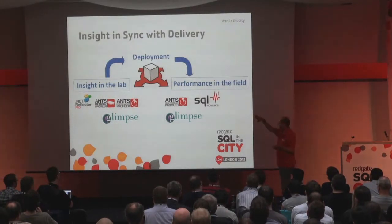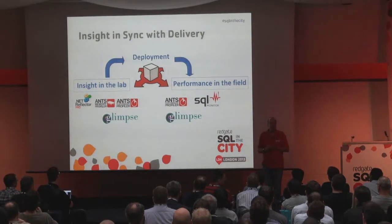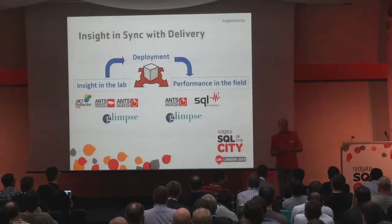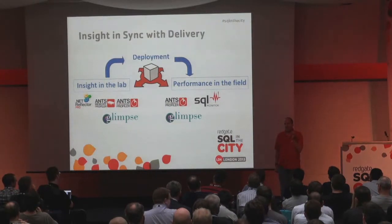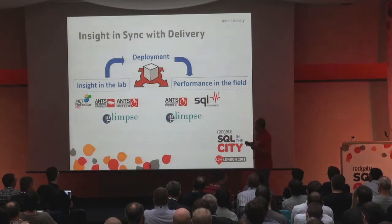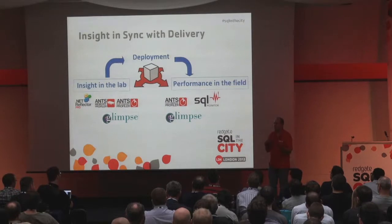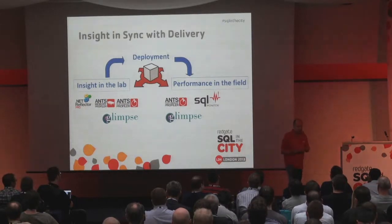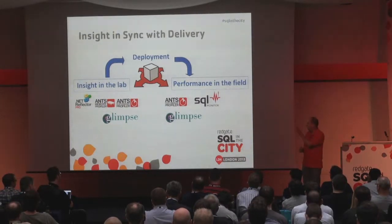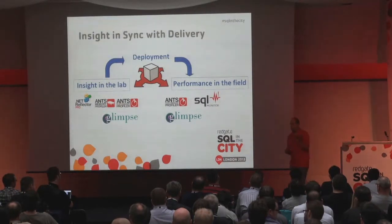The first tool in this insight space is ANTS Performance Profiler. It takes a look at your .NET code and tells you which lines are taking the longest, so you can understand what your application is doing, where the bottlenecks are, and start addressing them. Along with ANTS Performance Profiler there's ANTS Memory Profiler, which lets you see how your application is using memory and troubleshoot memory problems. There's also Reflector, which many .NET developers know, that allows you to look at third-party .NET code. And most recently we started supporting an open source tool called Glimpse.